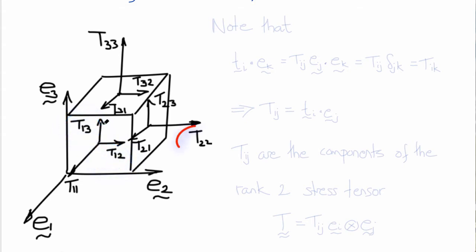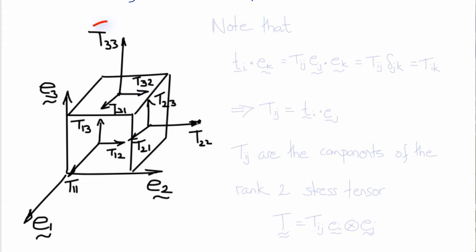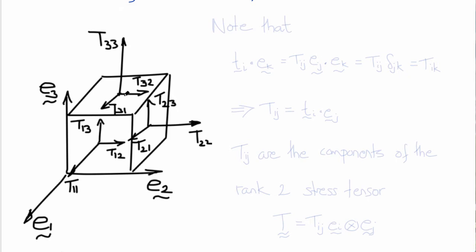Similarly, T22 is normal to the E2 plane acting in direction E2, with shear components T21 and T23. And T33 is the normal component with shear components T31 and T32. These arrows are drawn in the positive directions — the same directions as the base vectors — and on the positive faces whose outward normals are the unit vectors. So these are all positive components of stress as drawn, giving a total of nine quantities which are the nine components of the Cauchy stress tensor.